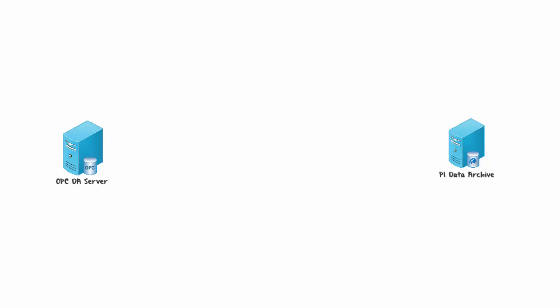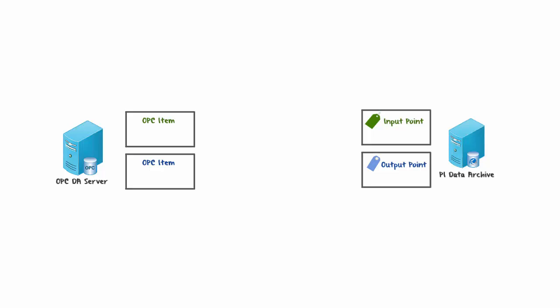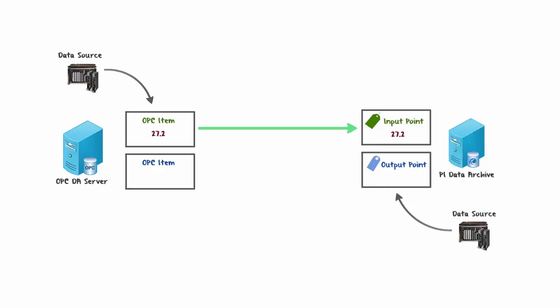Here we have an OPC Server and a PI Data Archive. Our OPC Server has various OPC Items, and our PI Data Archive has an Input Point and an Output Point. Input Points are what you would expect — a data source feeds a value into an OPC Item, and the PI Interface for OPC DA is responsible for sending that value into the data for your Input Point.